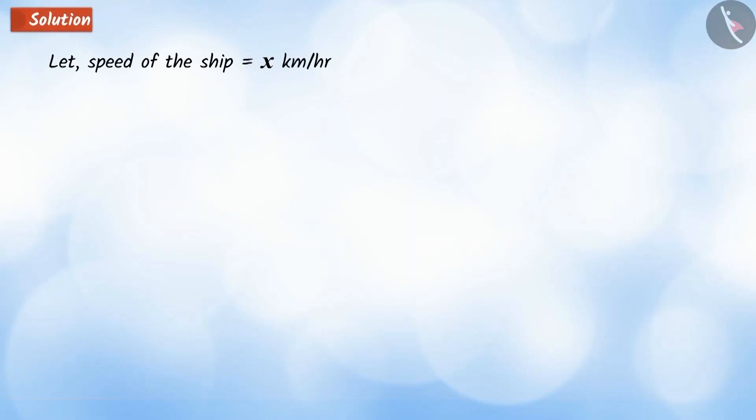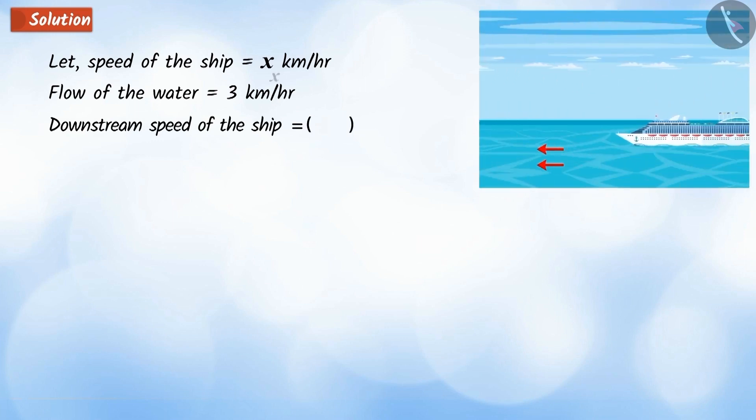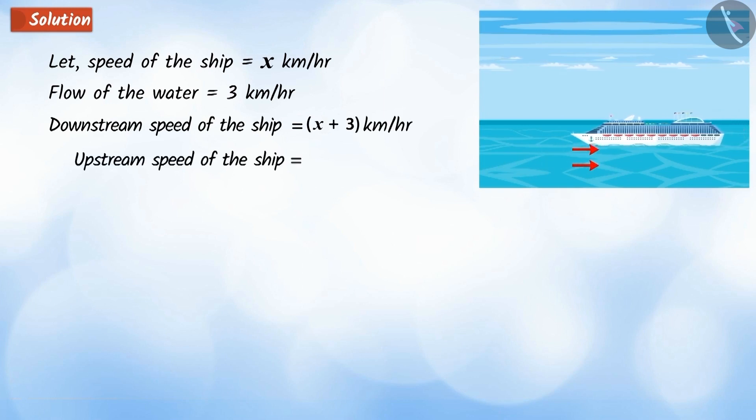First, let's assume that the speed of the ship is x km per hour. According to the example, the flow of water is 3 km per hour, where the speed of the ship favorable to the stream is equal to x plus 3 km per hour and the speed unfavorable to the stream is equal to x minus 3 km per hour.